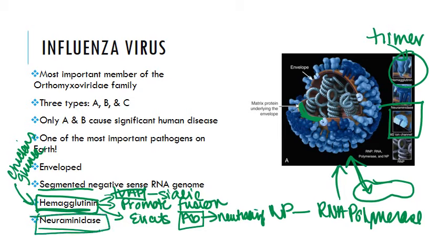Neuraminidase forms a tetramer and cleaves the sialic acid on glycoproteins, including the cell receptors for the virus. This prevents clumping of the virus on the cell surface, facilitating the release of the virus from the host cell once it has been replicated. There are antiviral drugs that work as neuraminidase inhibitors, most notably zanamivir and oseltamivir.